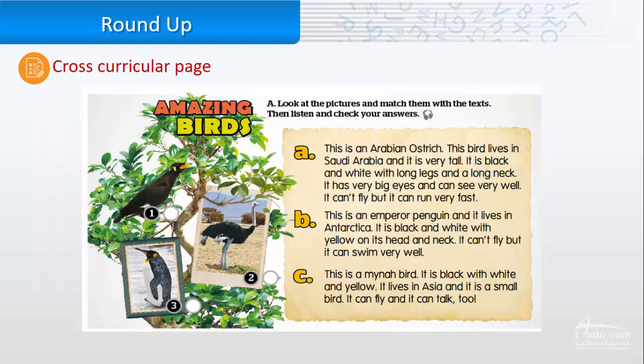Look at the pictures. One, two, and three. Let's read the description and match the pictures. A. This is an Arabian ostrich. This bird lives in Saudi Arabia and it is very tall. It's black and white with long legs and a long neck. It has very big eyes and can see very well. It can't fly, but it can run very fast.